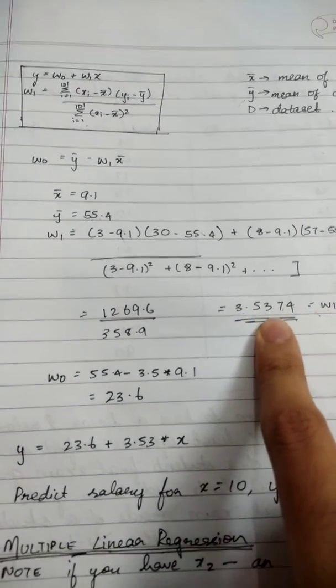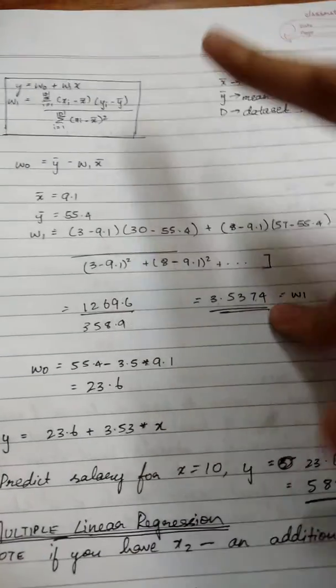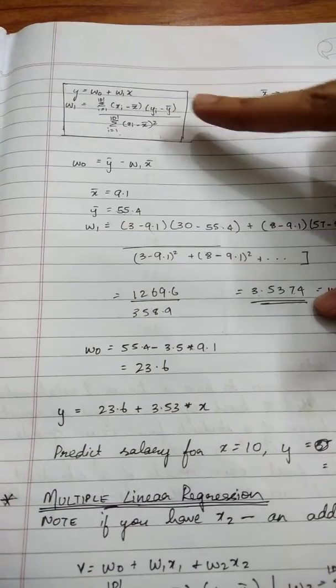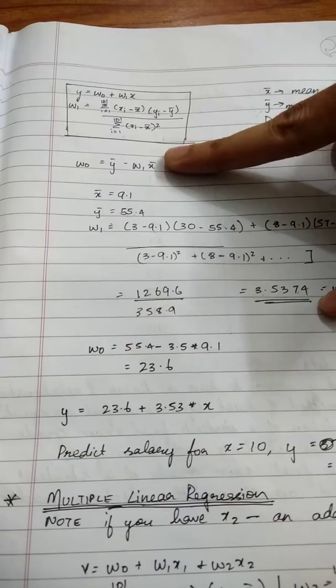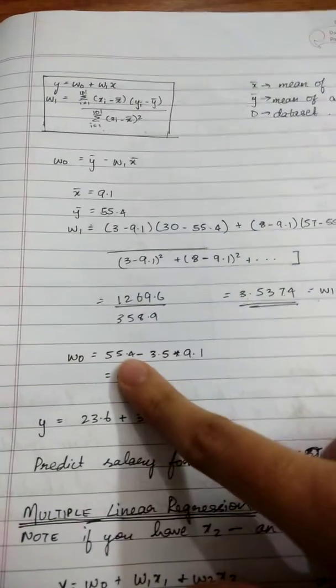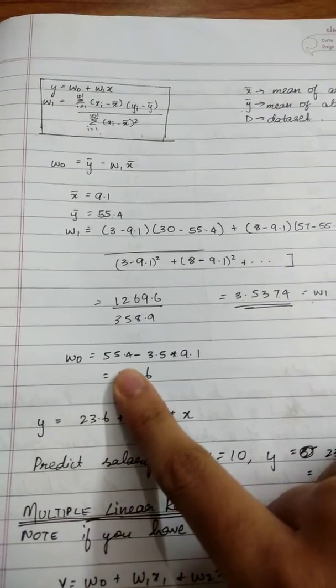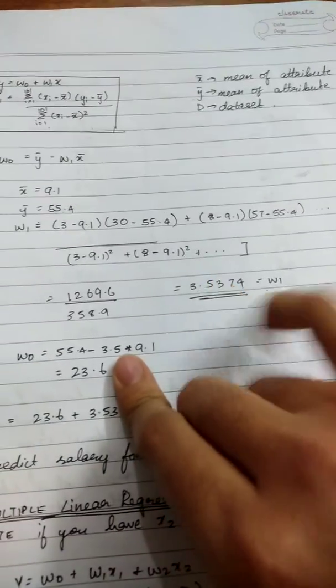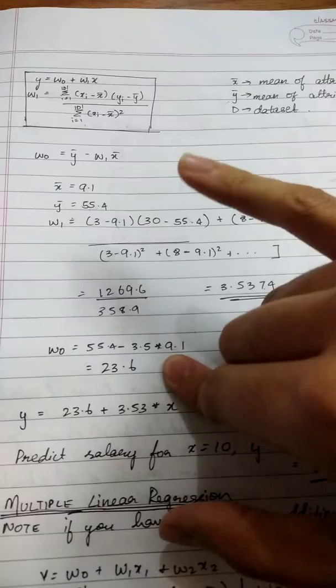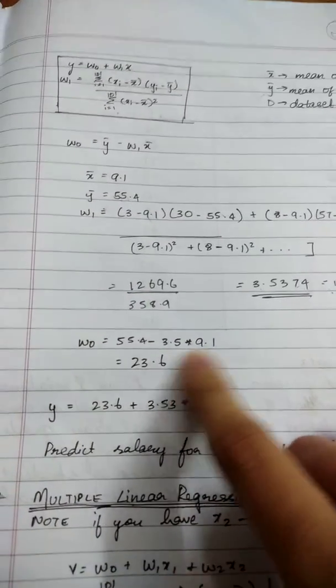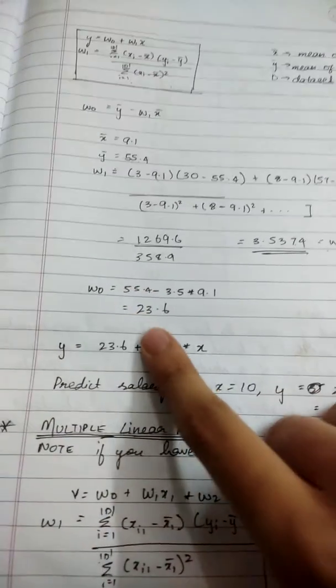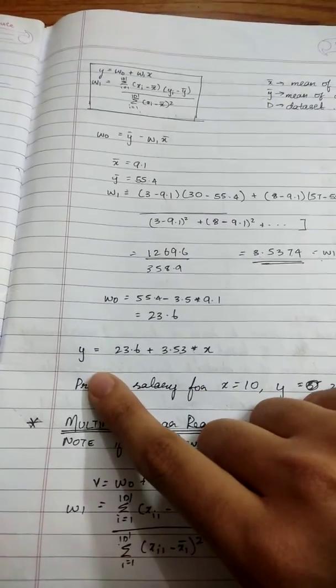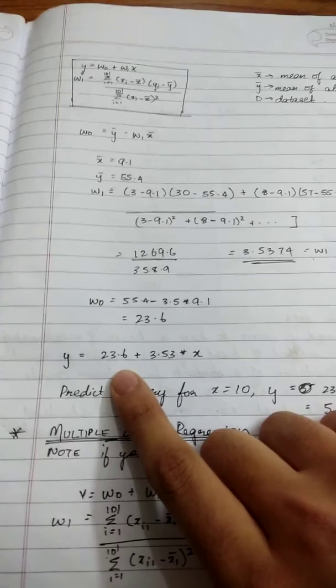You substitute into the W₀ formula: W₀ equals 55.4 (which is Ȳ) minus W₁ (which is 3.53) times 9.1 (which is X̄). You get W₀ equals 23.6. After you get this, you take the first formula: Y equals W₀